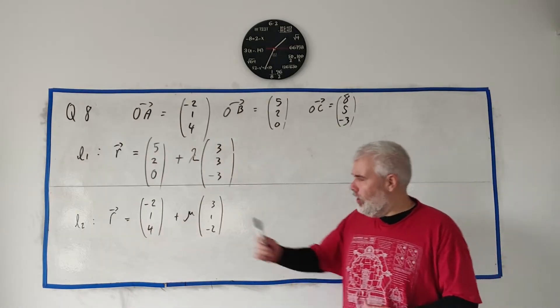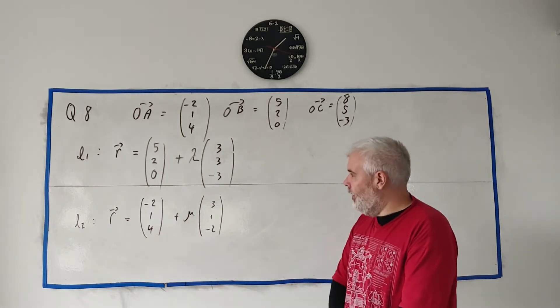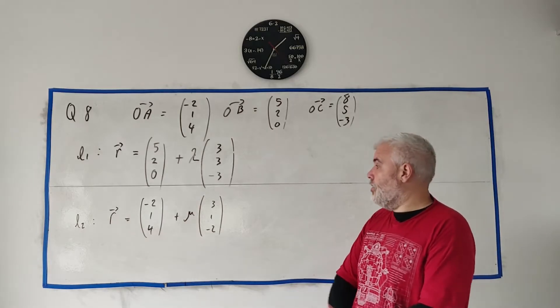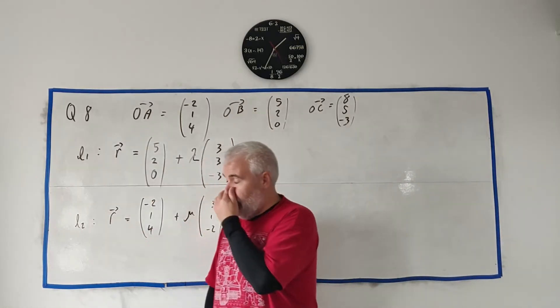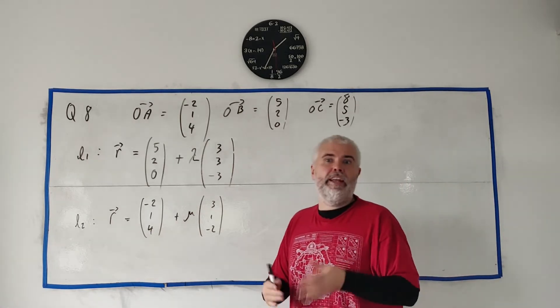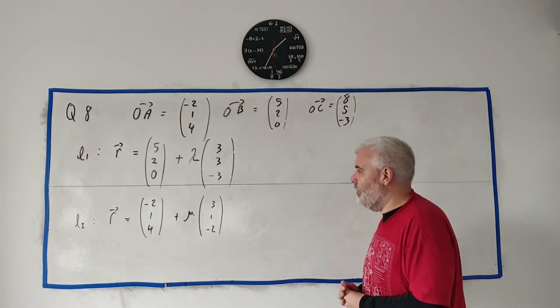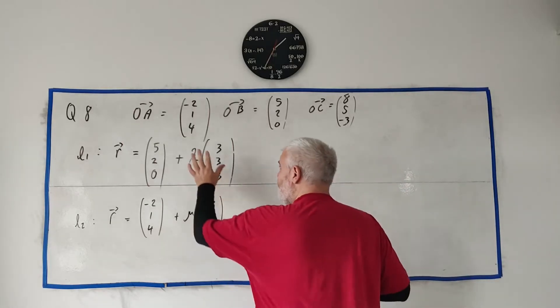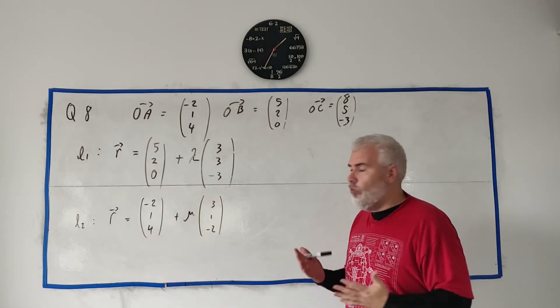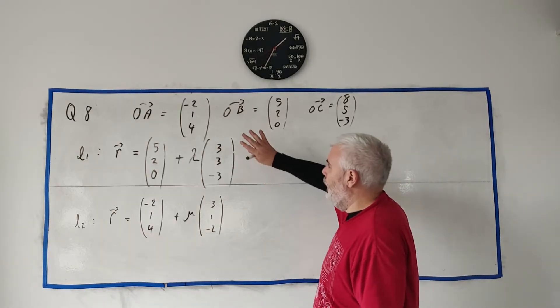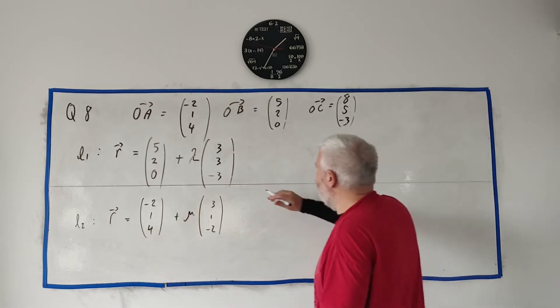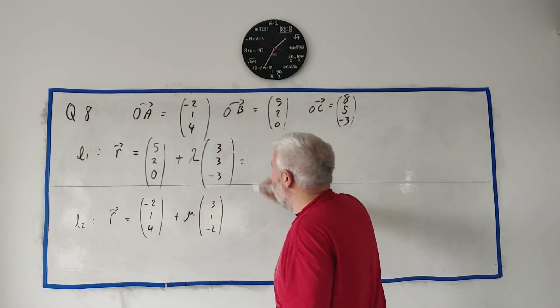In part B, they give us another line, L2, and they give the equation of that line, as we see here. And they ask us to find the coordinates of the point of intersection between L1 and L2. Now, two lines aren't guaranteed to hit in three dimensions, but we'll go ahead and assume they will hit because they told us to find the point of intersection.